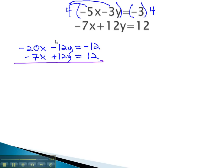We are now ready to add these together, as the y's will subtract out to 0, leaving negative 27x equals 0. Get x alone by dividing by the negative 27, and we find out x is equal to 0.